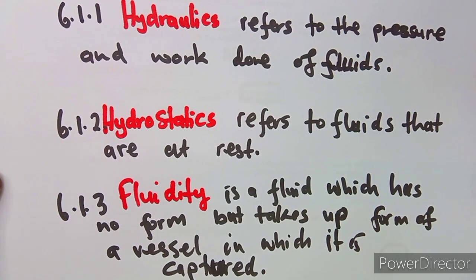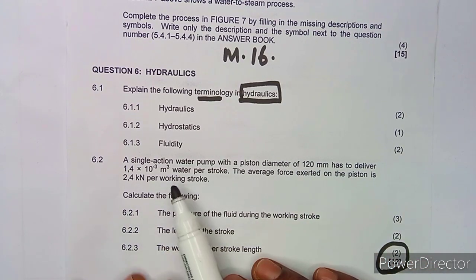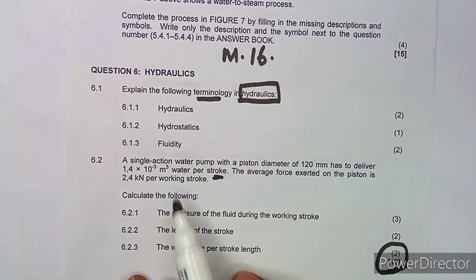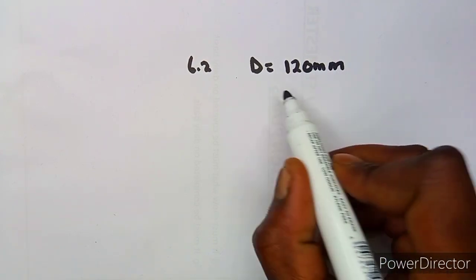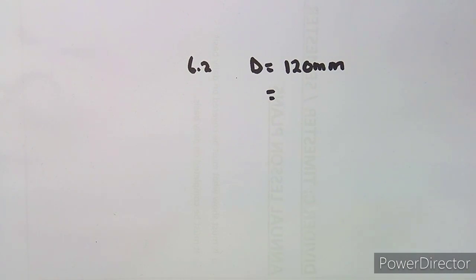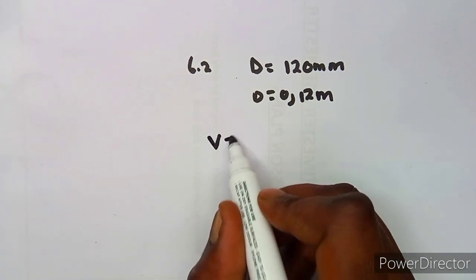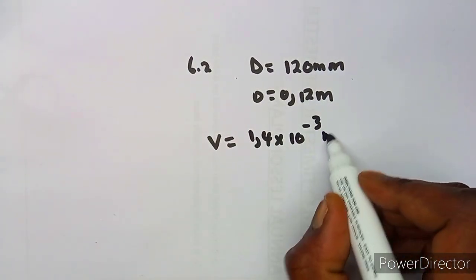On question 6.2, we are given a single-action water pump with a piston diameter of 120 millimeters, which in meters is 0.12 m. The pump is to deliver a volume of 1.4 × 10⁻³ cubic meters per stroke.